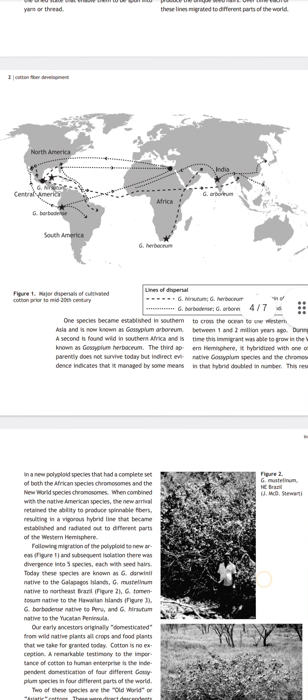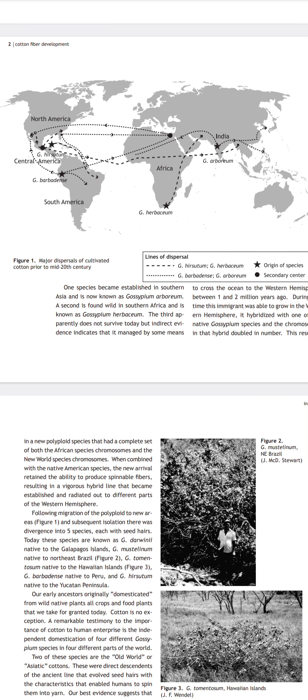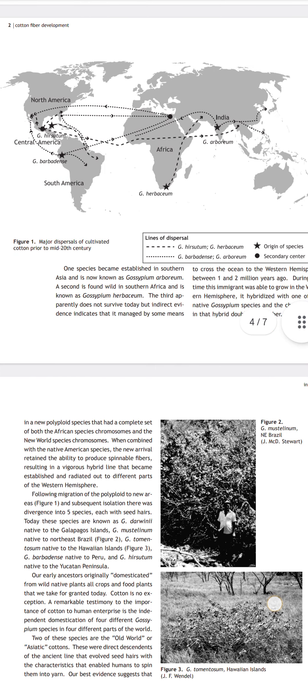In Brazil, James McD, during his PhD, figured out the migration of the polyploid into new areas and subsequent isolation. There was divergence into five species. Today these species are known as Gossypium darwinii, native to the Galapagos Islands; Gossypium mustelinum, native to northeast Brazil; and Gossypium barbadense, native to the Yucatan Peninsula.